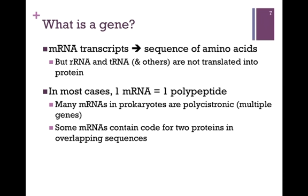Let's next define what is a gene. In the process of transcription we generate messenger RNA or mRNA transcripts, and in the process of translation that will be converted to a sequence of amino acids. But we must remember there are ribosomal RNA molecules (rRNA) and transfer RNA molecules (tRNA) and others that are not translated into protein — they function solely at the level of the RNA. In most cases, one mRNA transcript will produce one polypeptide, though there are exceptions.